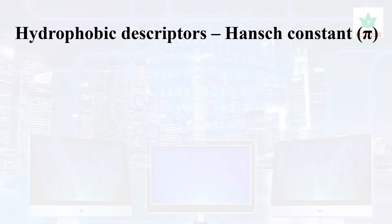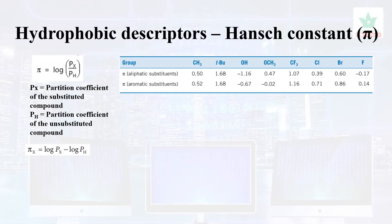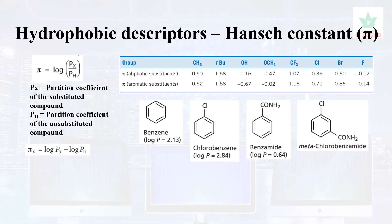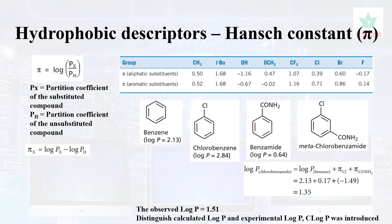The next hydrophobic descriptor is the Hansch constant Pi (π). It is defined as the partition coefficient of the substituted compound divided by the partition coefficient of the unsubstituted compound. There are aliphatic substitution and aromatic substitution values. Benzene is the unsubstituted reference. For example, meta-chlorobenzamide gives a value of 1.51. The computer-predicted value is c log P.